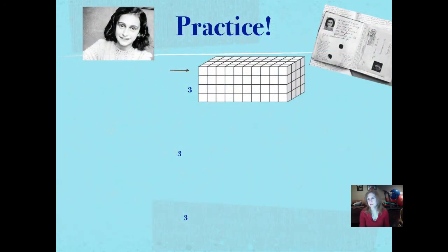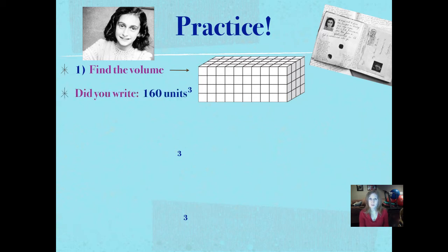Now, we're going to practice. Here's number 1. Find the volume of that figure to the right there. You can either count and multiply, or you can use the formula. Volume equals length times width times height. Pause it and push play when you're ready. Did you write 160 cubic units? If we count across, the length times the width times the height is 160 cubic units.